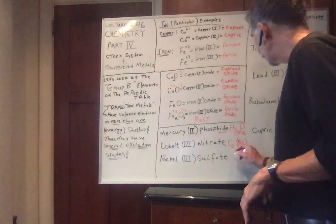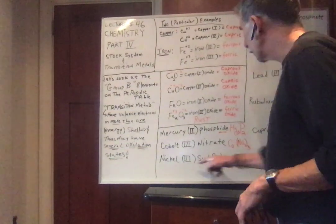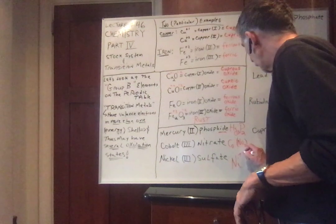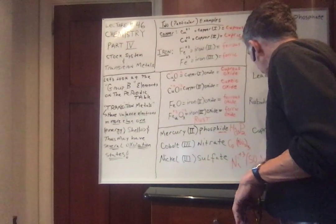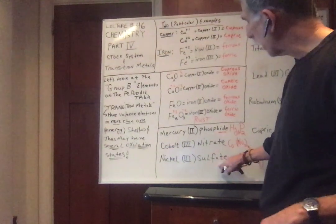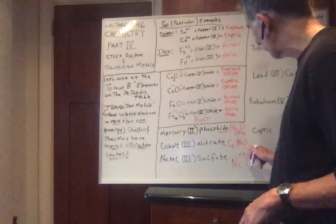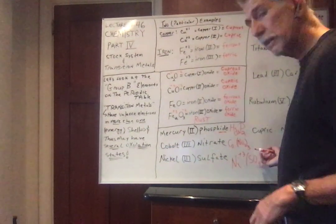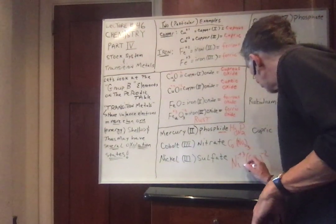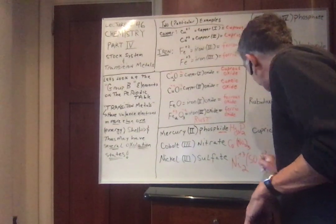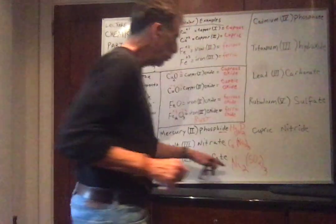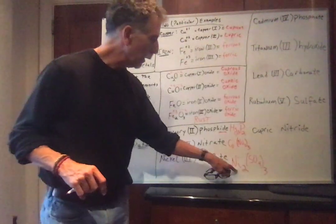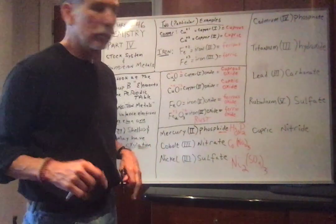Nickel 3 sulfate. Ni, what's the charge? It's just 3. Sulfate is SO4 with a minus 2. That's one of the polyatomics. Nitrate is a polyatomic. This gives 3 electrons, this needs 2 electrons. So we do 2 and 3, take away the oxidation number, and there you have it, the formula for nickel 3 sulfate.